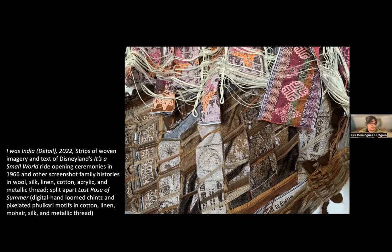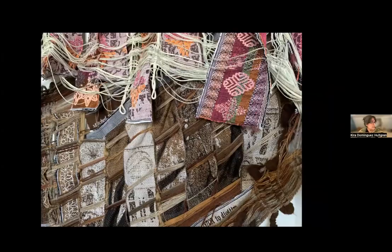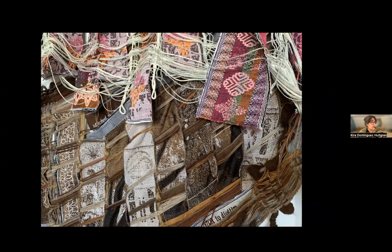In I Was India, I used weaving as a way of framing the construction of Indian American identity and how it was put to use in my mother's generation. Images and histories of my mother and her siblings as they represented India, riding on elephants in Disneyland parades in the 1960s, and of my mother, who was part of the 1966 opening ceremonies for It's a Small World at Disneyland, filled the bottom layer of this weaving. But these images are frayed, twisted, mixed together with research and narrative and my own hand at work in the history.